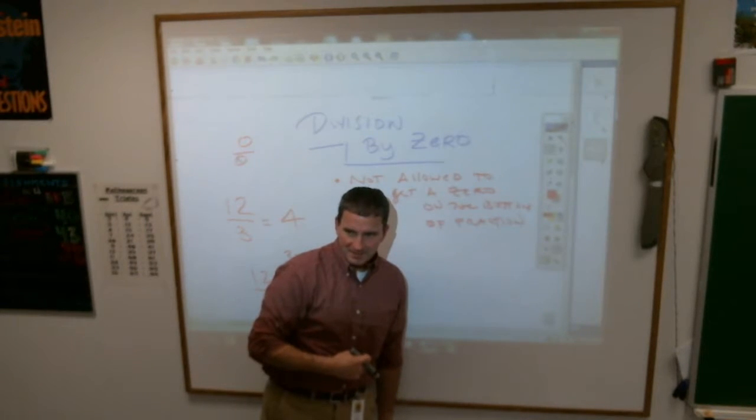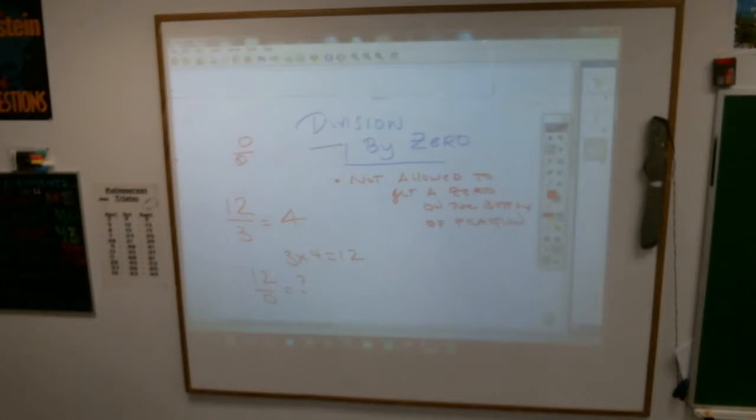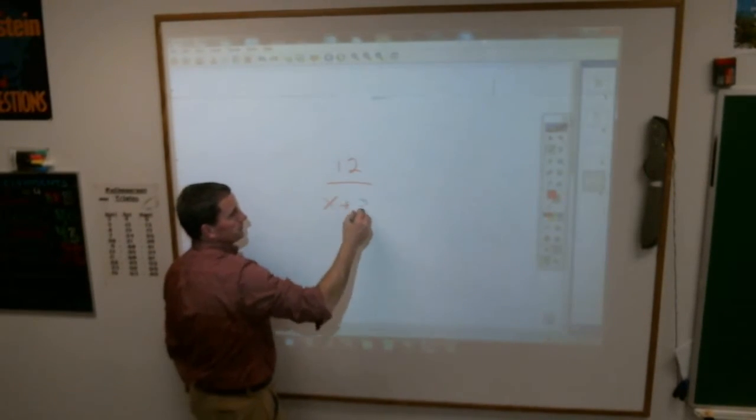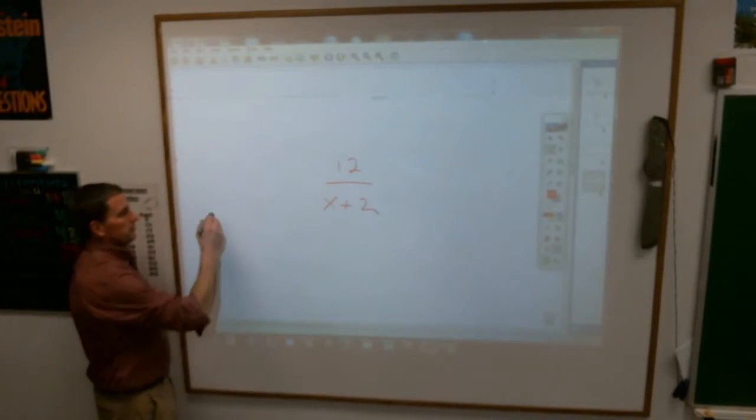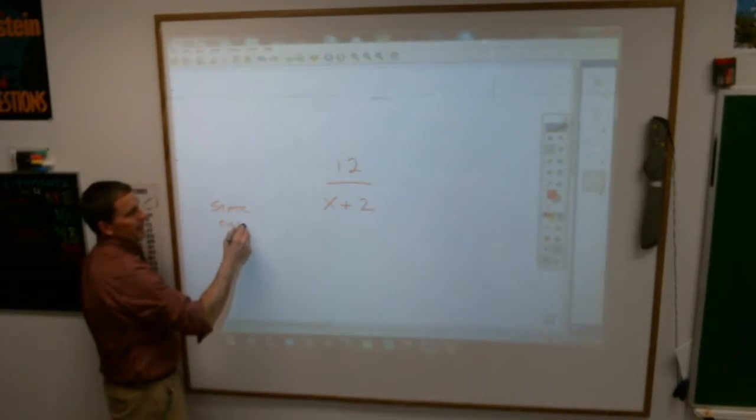Okay, with that being said, sometimes it's not easy or obvious what you're going to get at the bottom. For example, here's the deal. If you have this, twelve over x plus two, they're going to ask you to state the excluded values.